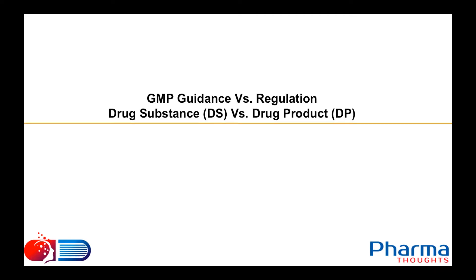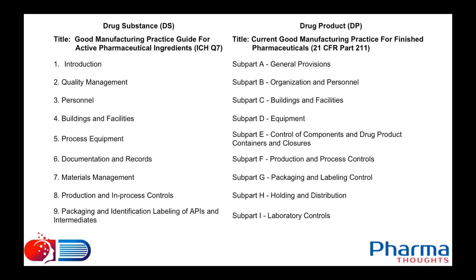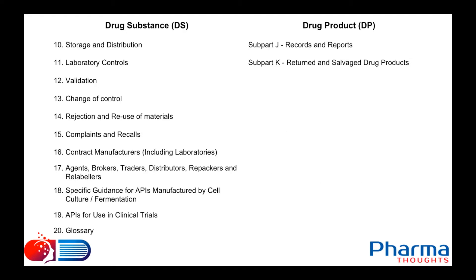What are the contents of these guidances and regulations? Looking at GMP for APIs as per ICH Q7, there are 20 sections. The contents start with an introduction, then quality management system requirements, personnel requirements, buildings and facilities, process equipment, documentation and records, material management, production and in-process controls, packaging and identification, labeling of APIs and intermediates, storage and distribution, laboratory controls, validation, change control, rejection and reuse of materials, complaints and recalls, and so on.